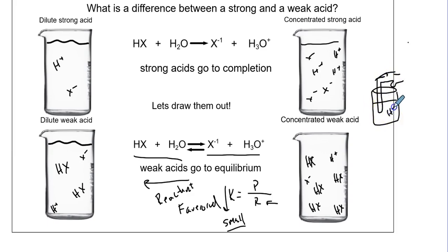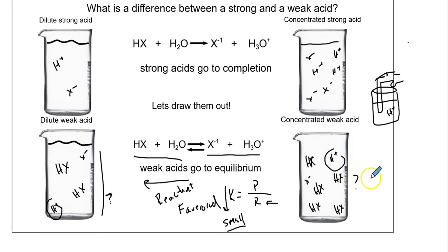It's the H+ ions. Do you see any H+ ions here? Well, we got one. So here we got a bunch. Keep in mind that the HX here is not acidic until it actually produces an H+ ion. That's an important note.